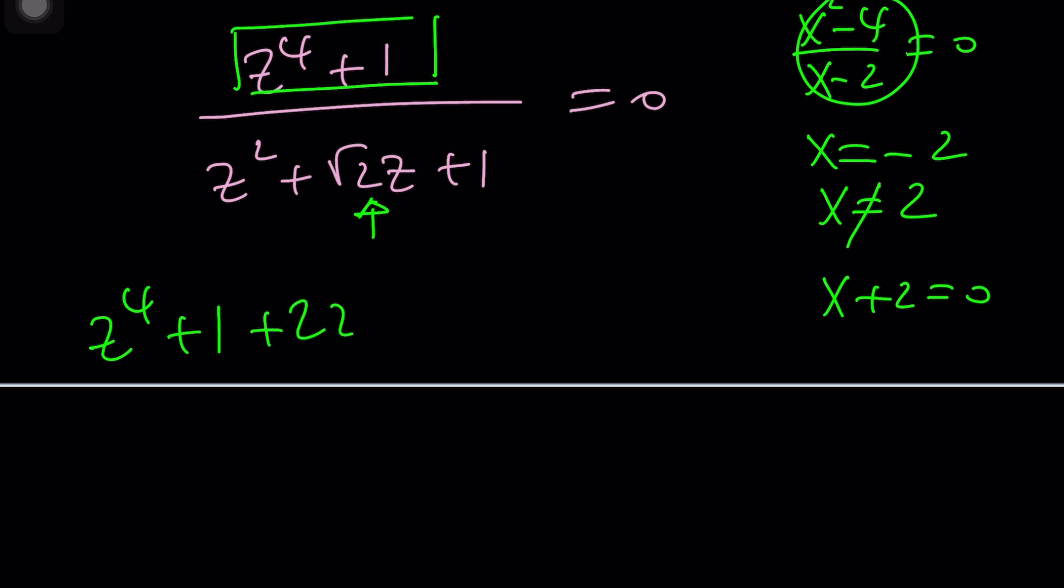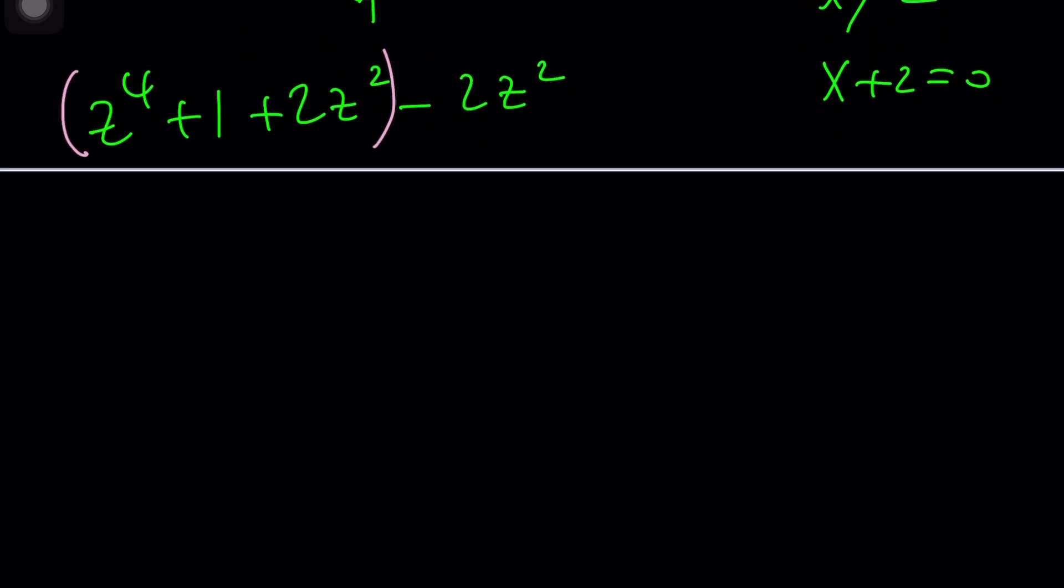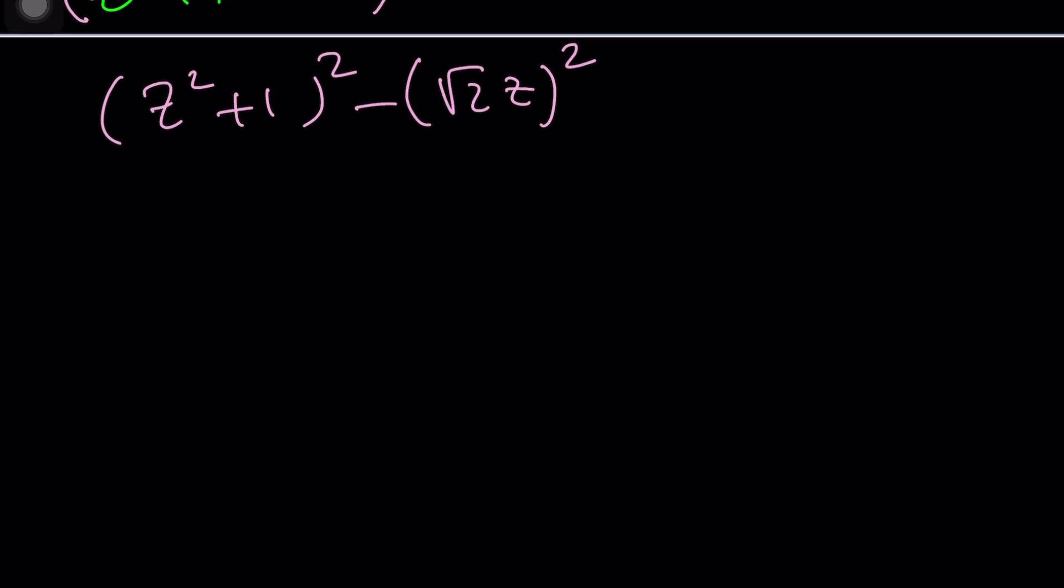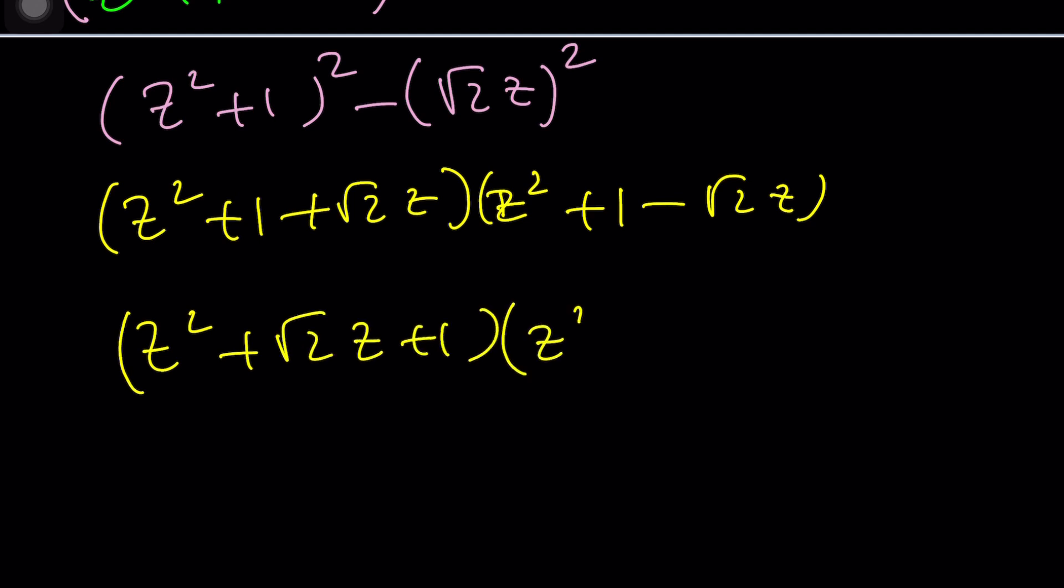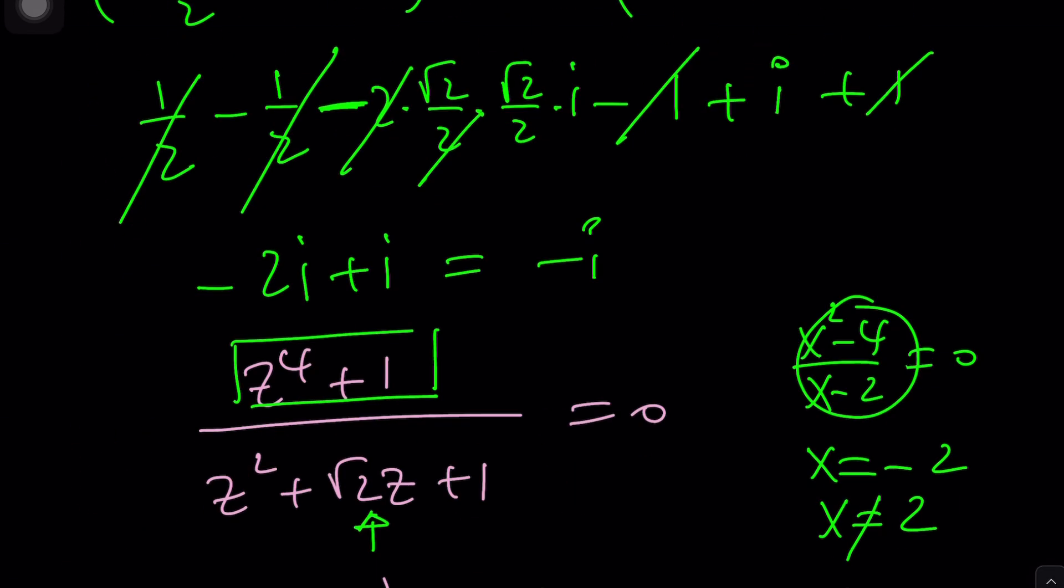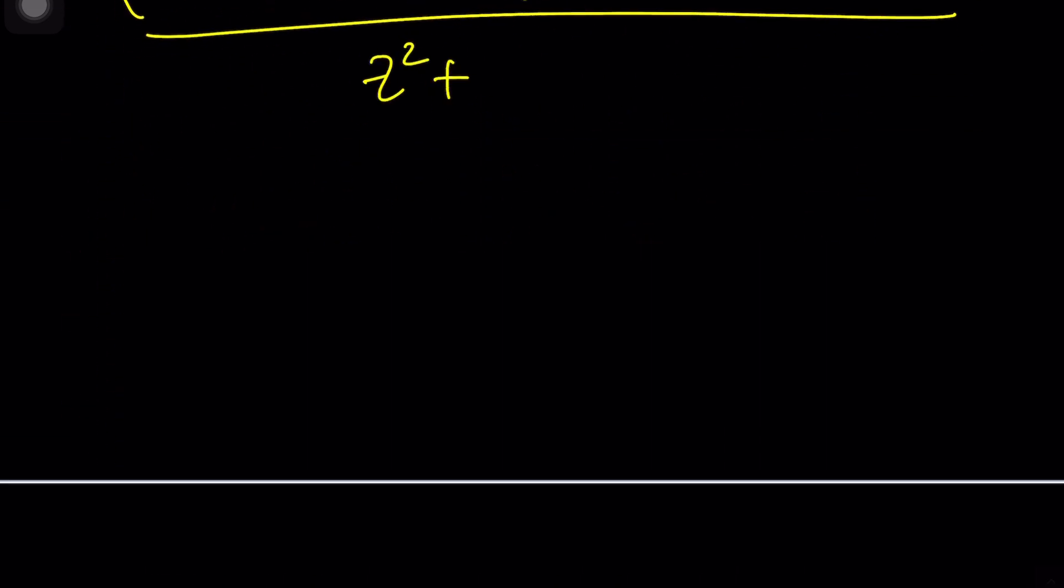So how do you factor z to the fourth plus 1? I would say Sophie Germain. How does Sophie Germain work? You add 2z squared and subtract it. Nothing changes. But why do you do that? For a good reason, because this becomes a perfect square, and we can make this a perfect square with some force. Now, this is the difference of two squares, and we can kind of write it like this. But then we want to write things in standard form. Let's do this in standard form, and then let's also include the denominator.